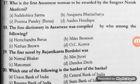Question number 19: the first novel by Rajanikanta Bordoloi was — Nirmal Bhakat, Miri Jiyori, Manu Mutti, or Dandua Dora? The correct answer is B — Miri Jiyori — and the year was 1894.